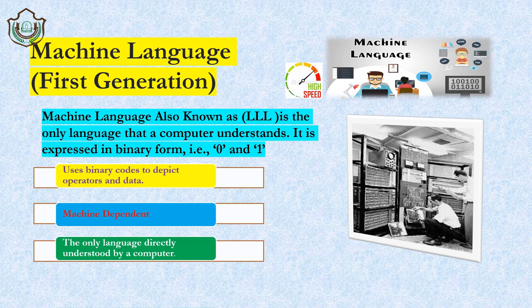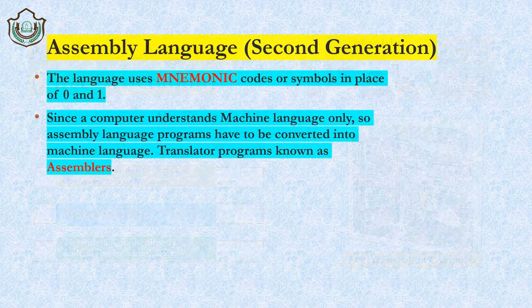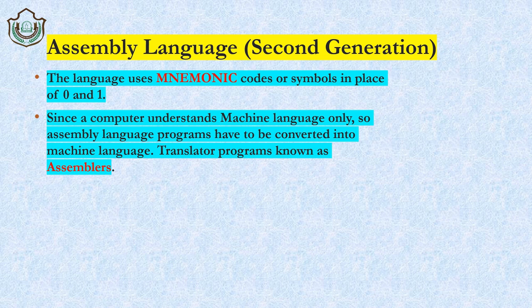That was the first generation computer. Now we move to assembly language, which is called the second generation language. If asked which language is the second generation, the answer is assembly language. The key difference from machine language is that in assembly language we use mnemonic codes or symbols in place of 0 and 1.